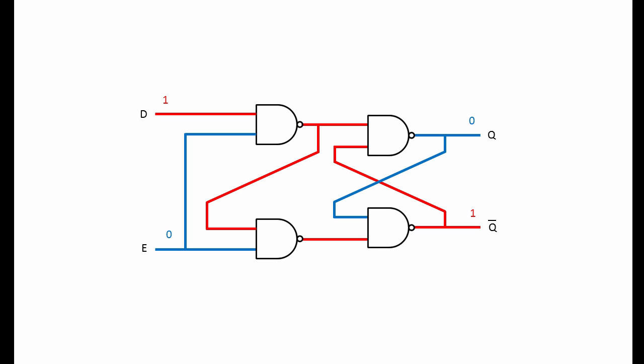E is still low, D becomes high, but Q remains low. E becomes high again, D is already high, so Q goes high.